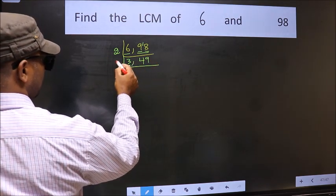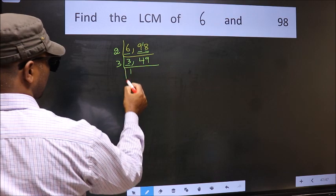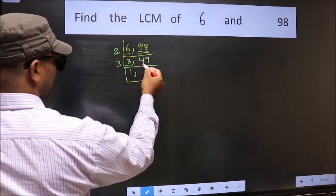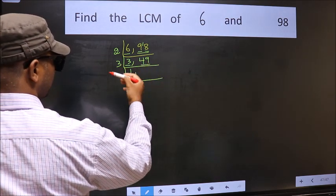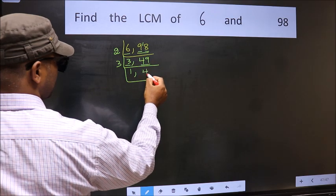Now here we have 3. 3 is a prime number, so 3, 1 is 3. The other number 49, not divisible by 3, so we write it down as it is.